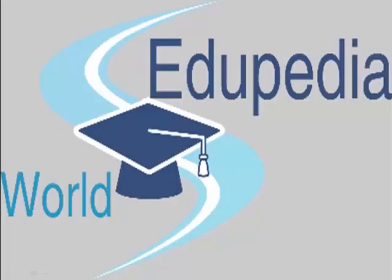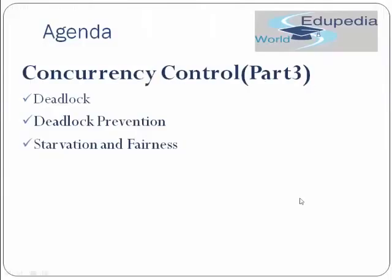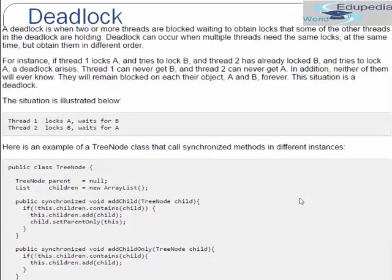Hello and welcome to Edupedia World. In this tutorial we learn about concurrency control part 3. In part 3 of concurrency control we study deadlock, deadlock prevention, starvation and fairness. Although we have already studied the gist of deadlock while studying threads in Java, here we see this topic in detail.